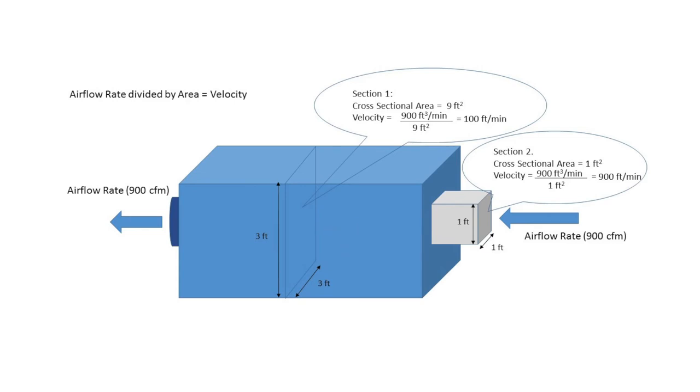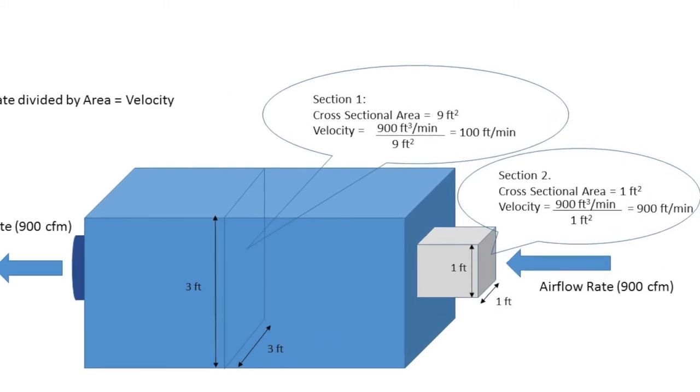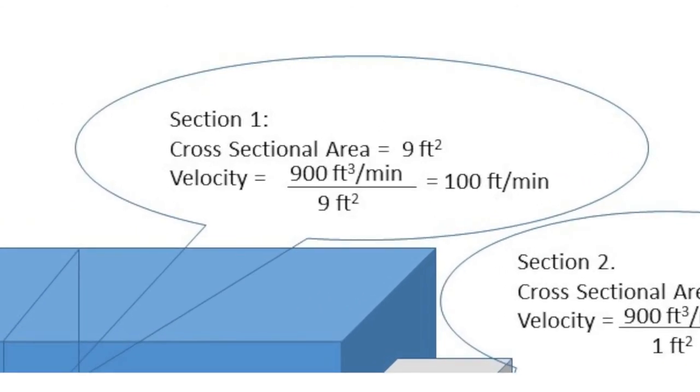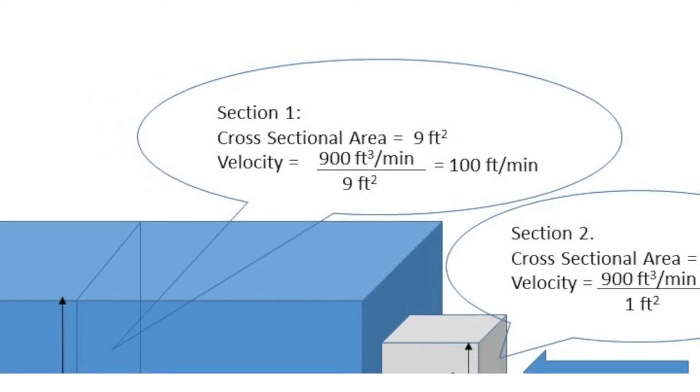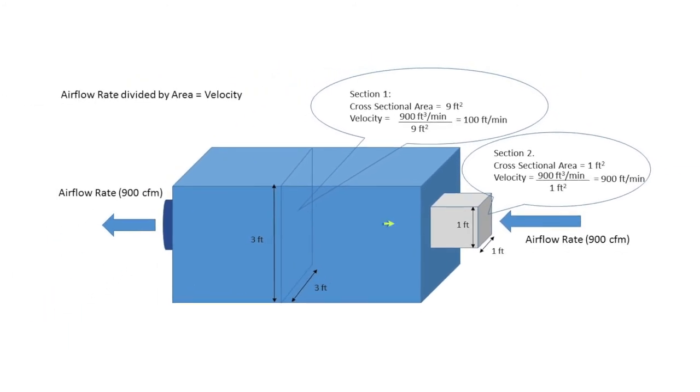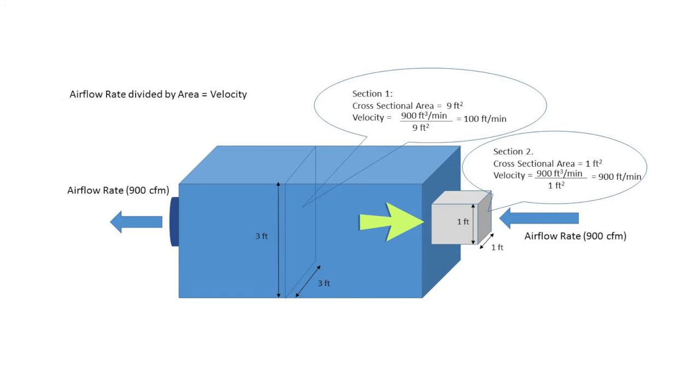Reducing this area will result in increased velocity, as shown by this diagram. In this system, the airflow rate is 900 cubic feet per minute. Looking at the larger cross-sectional area of 9 square feet, the velocity is calculated by dividing 900 cubic feet per minute by 9 square feet, resulting in a velocity of 100 feet per minute. Now see what happens when the area is reduced to 1 square foot. The velocity increases to 900 feet per minute.